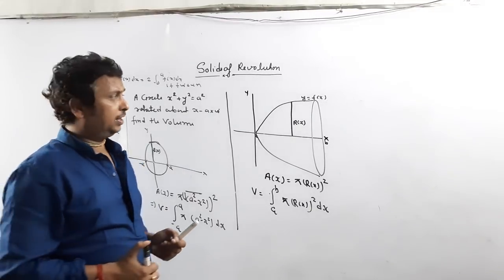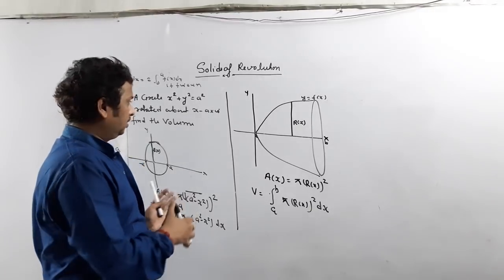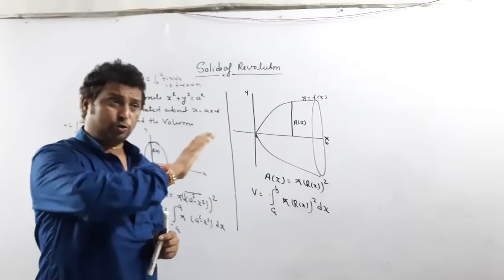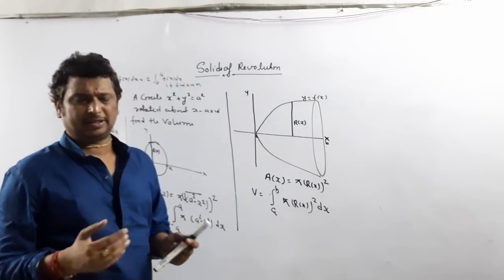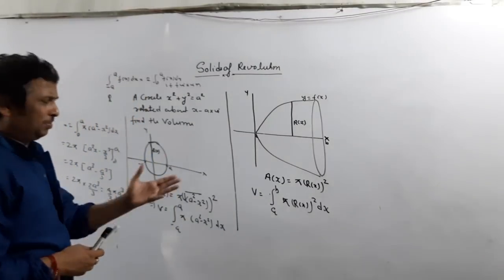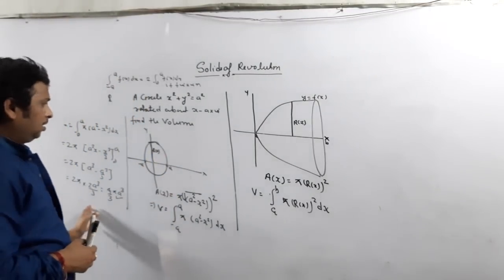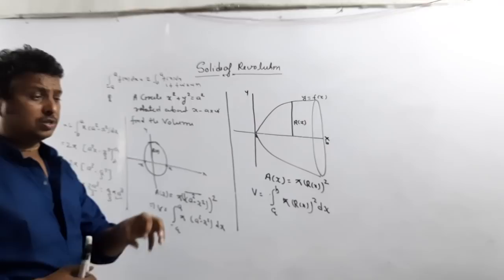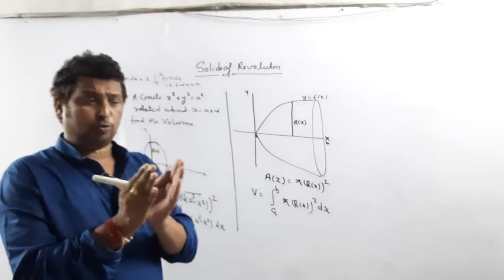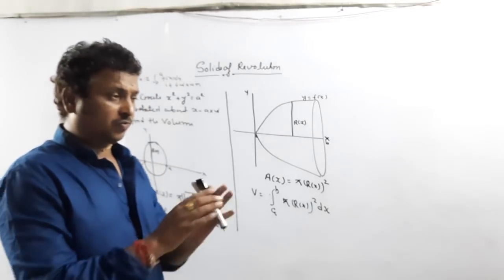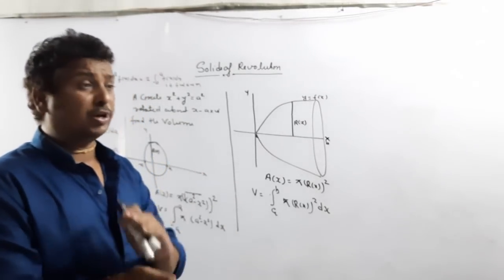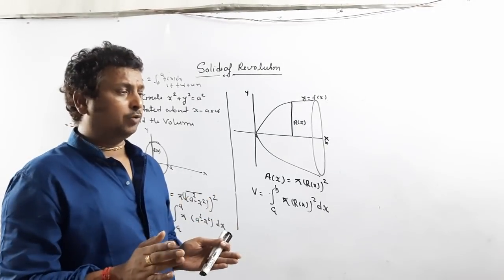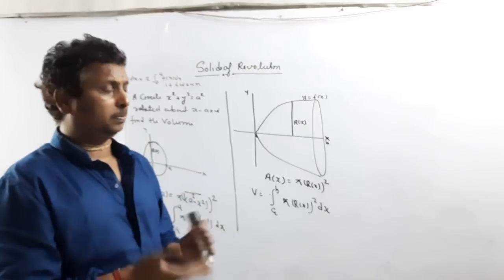Integrating: 2π · [a²x − x³/3] from 0 to a equals 2π · (a³ − a³/3) equals 2π · (2a³/3), which gives 4πa³/3. This is the volume of the sphere, and you know this result. Now I am going to do one more question, and then we will see what happens when it is rotated about the y-axis.